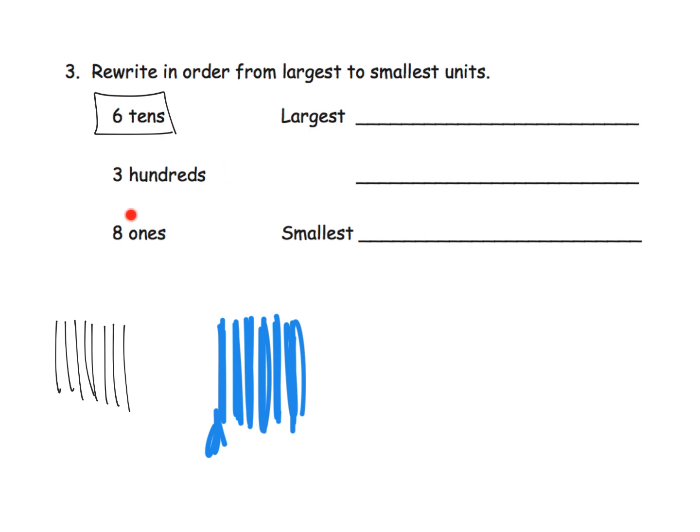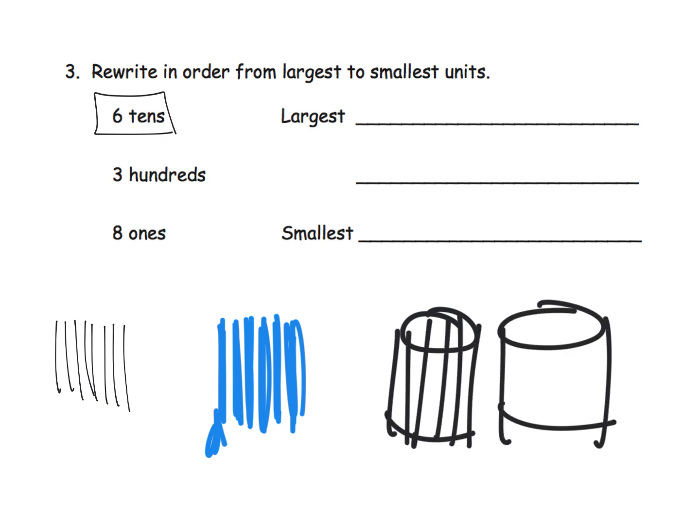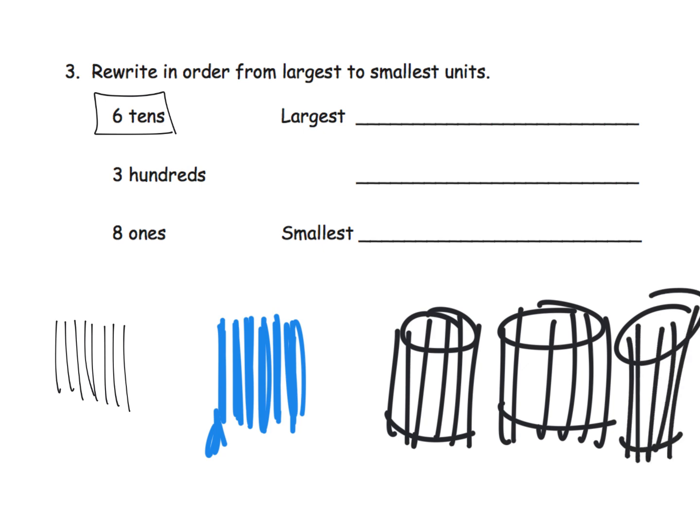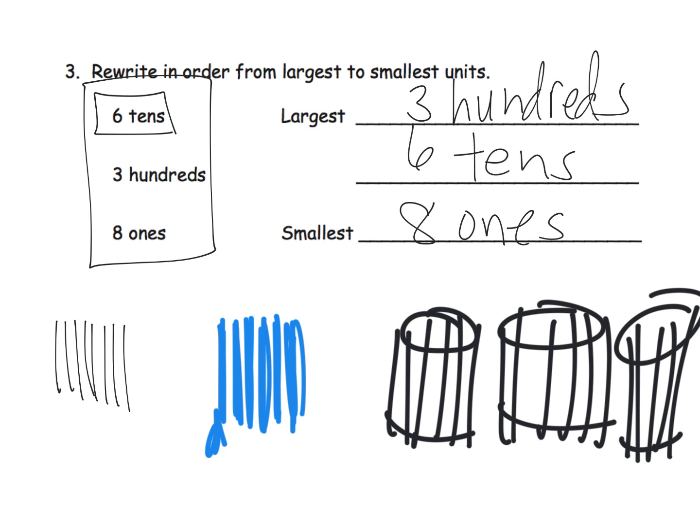And then we have 300. So oh my goodness, that's going to be like all the bundles together. Three sets of tens. I mean, three sets of 10 tens. Oh my goodness. So the idea is we should be able to get students thinking physically. And they can sort these so that they can see that eight ones is the smallest, three hundreds is the largest, and six tens is the middle.